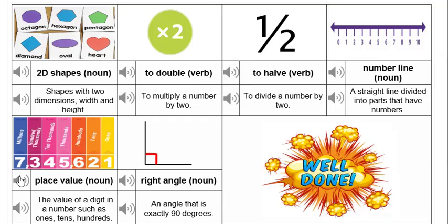Place value. The value of a digit in a number such as ones, tens, hundreds. Right angle. An angle that is exactly 90 degrees.